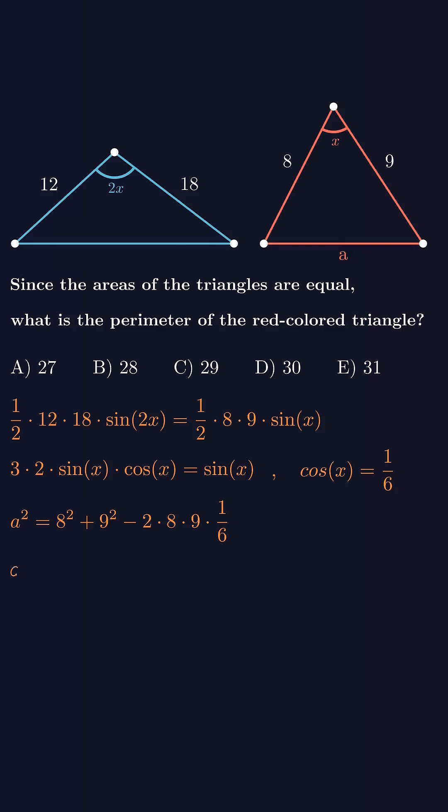Now when you do the math, you'll find that a equals eleven. To get the perimeter, add up all the side lengths: eight plus nine plus eleven, which gives us twenty-eight. So the correct answer is choice B.